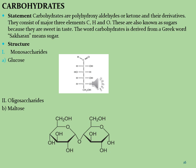Let's see what are the carbohydrates. Carbohydrates are polyhydroxyl aldehydes or ketones and their derivatives. They consist of three major elements: carbon, hydrogen, and oxygen. They are also known as sugars because they are sweet in taste. The word carbohydrate is derived from the Greek word saccharone, meaning sugar. Carbohydrates are of three categories: monosaccharides, oligosaccharides, and polysaccharides.